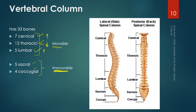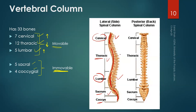There are four curves. The first and third curves — the cervical and lumbar — are lordosis, convex on the front side and concave on the back. The second and fourth curves — thoracic and sacrum plus coccyx — are kyphosis, concave on the front side and convex on the back side.